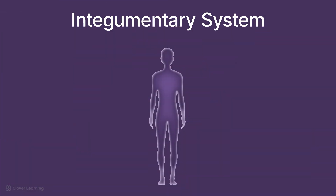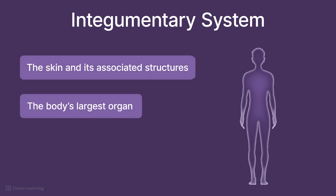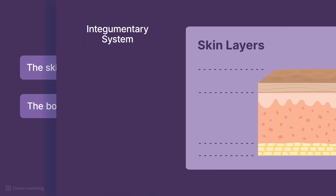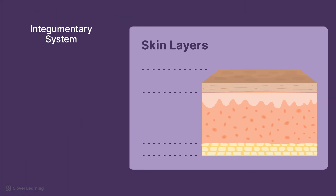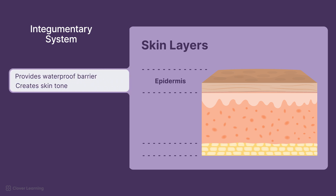In order to best understand the different administration techniques, first we need to identify the basic anatomy of the integumentary system. The integumentary system, comprising the skin and its associated structures, is the body's largest organ. The skin is comprised of three layers. Epidermis, the outermost layer, providing a waterproof barrier and creating our skin tone.